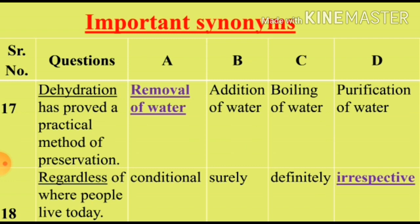Question 18: 'Regardless of where people live today.' We will see the synonym for the word 'regardless'. Option A: Conditional (shart/halat). Option B: Surely (yekeenan). Option C: Definitely (yekeenan). Option D: Irrespective (katay nazar). Options B and C are irrelevant. We will select from Option A and D. Option D, Irrespective, is the right synonym for the word 'regardless'.